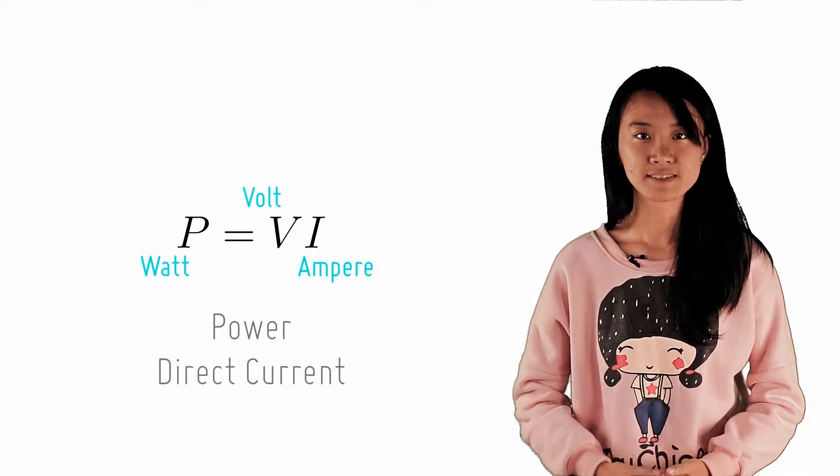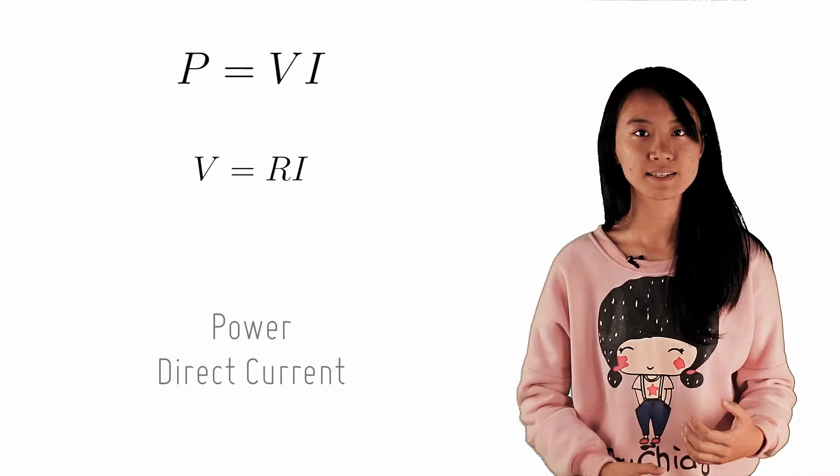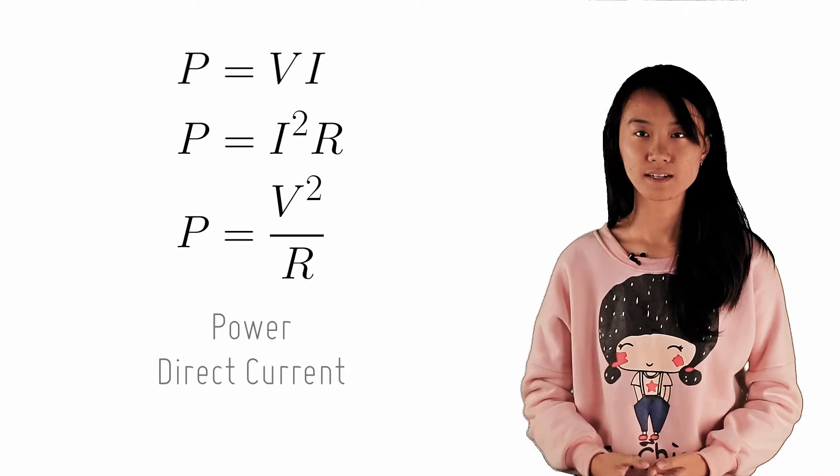Recalling that voltage is also resistance multiplied by current, we can express the power also as I squared R or V squared over R.